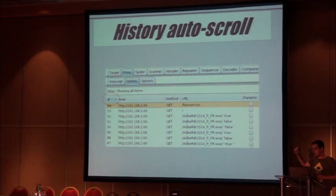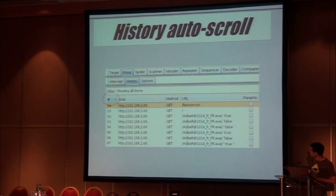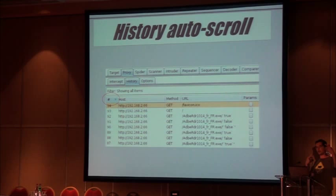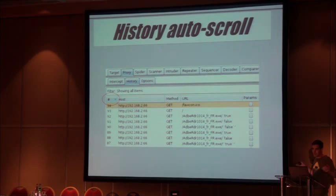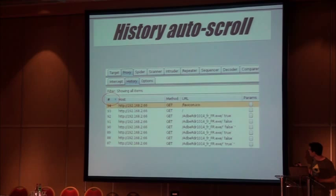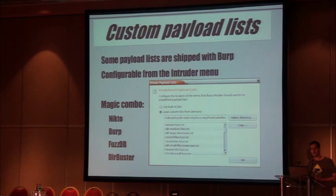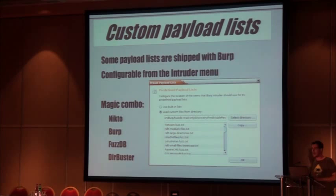In the forums there are questions asking for auto-scroll in proxy history. It's already there. By default every request is added at the bottom. If you simply click the column header, you get the same information in reverse order, so every new request pops to the top and you have auto-scroll. Very easy and stupid, but it works.